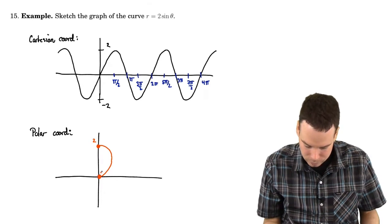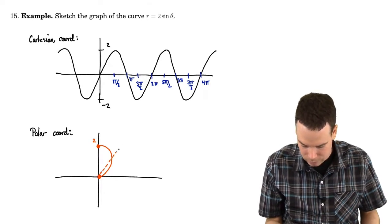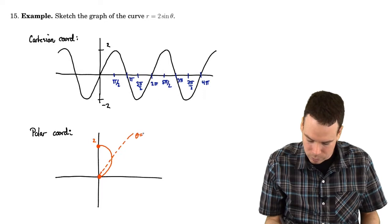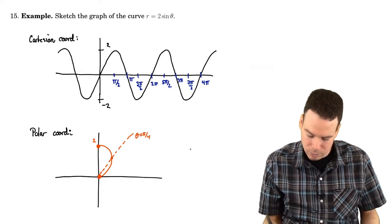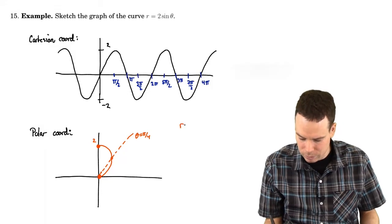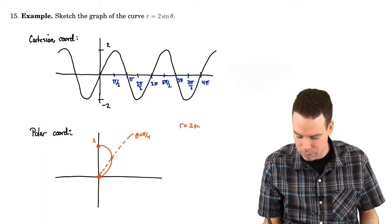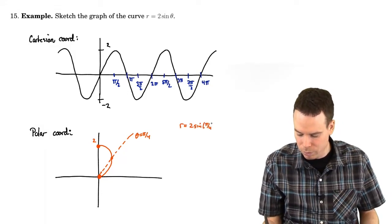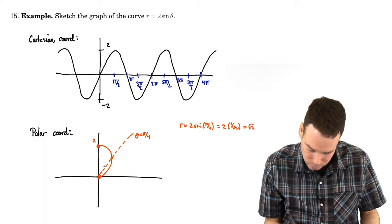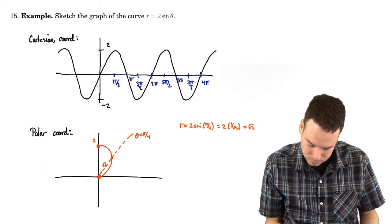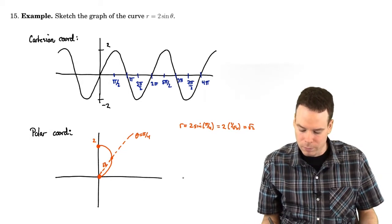So that for example, when I'm out here at theta equals pi by 4, my r value in that case, what is r when theta is pi by 4? That's sine of pi by 4. Or in other words, 2 times 1 over root 2 or root 2. So there's my r value. It's root 2.